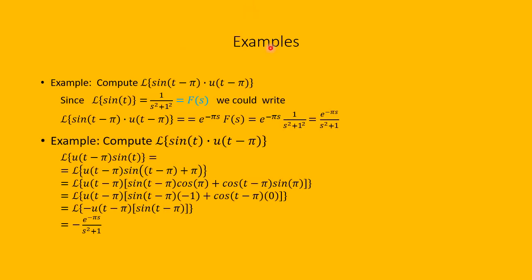Let's look at a couple of examples. First: compute the Laplace transform of sine of t minus pi times U of t minus pi. The Laplace transform of sine of t is 1 over s squared plus 1, call that capital F of s. By the translation property, the Laplace transform of sine of t minus pi times U of t minus pi is e to the minus pi s times F of s, which equals e to the minus pi s divided by s squared plus 1.